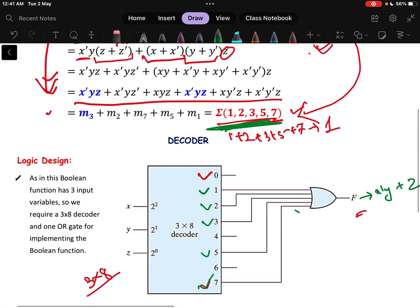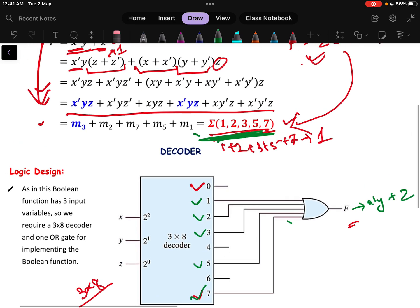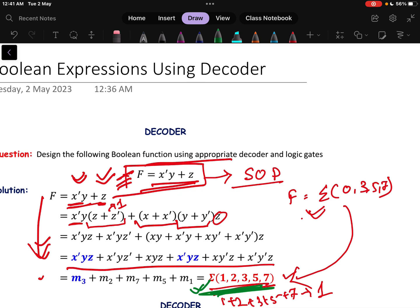This is how you can implement any Boolean function using a decoder. If the question is given like this then half of the step is done. If it is given like this then you have to properly convert that to SOP.